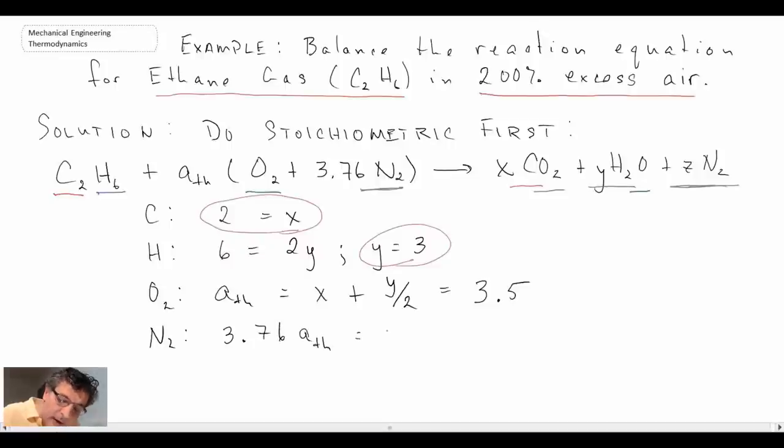And on the right hand side, it appears there. And so with that, on the left hand side, we have 3.76 times A theoretical is equal to, on the right hand side, Z. And with that, we get 13.16.